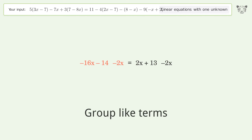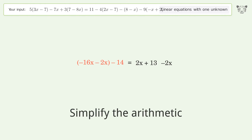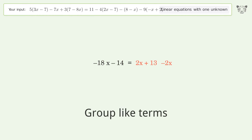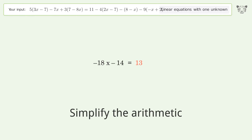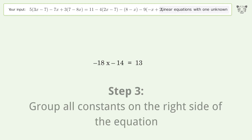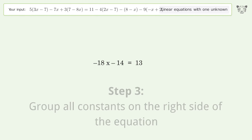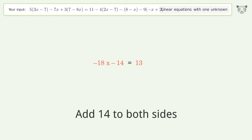Group like terms. Simplify the arithmetic. Group like terms. Simplify the arithmetic. Group all constants on the right side of the equation — add 14 to both sides.